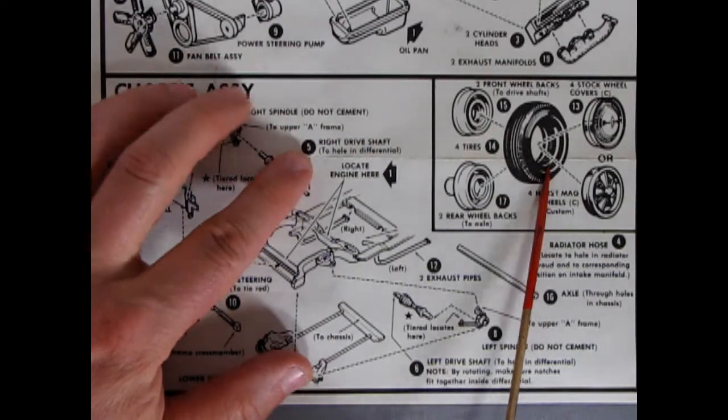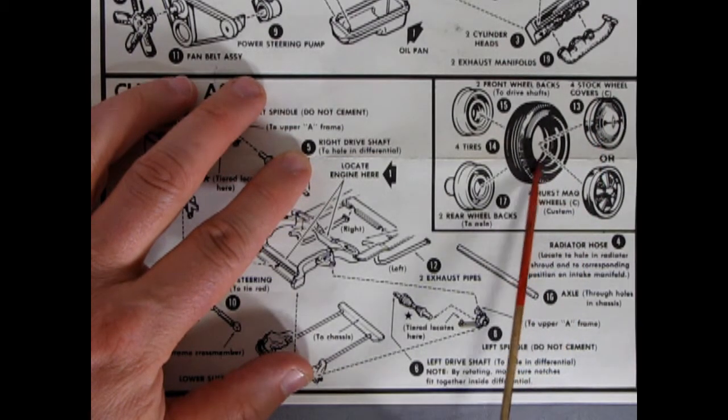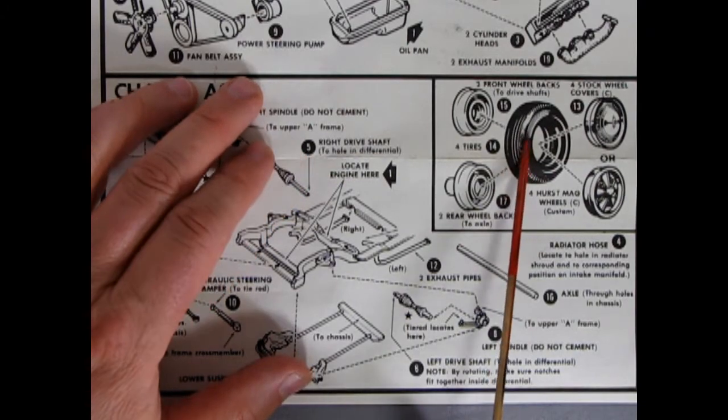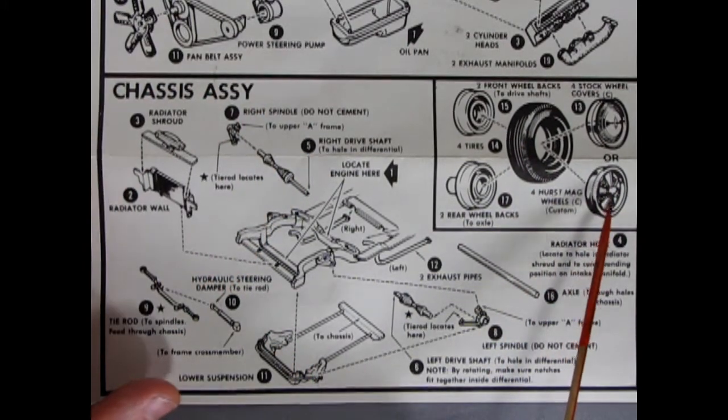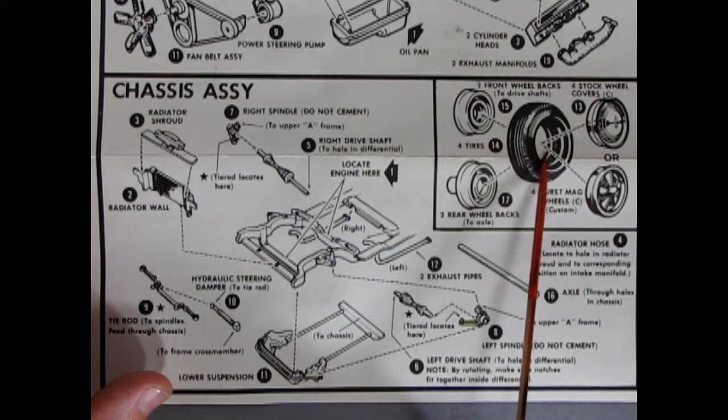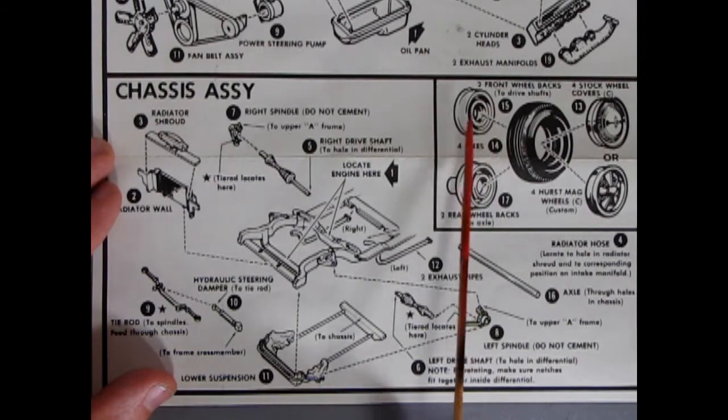And then here we have our choice of wheels. You of course can get your great big Oldsmobile stock wheel covers to pop into those rock-hard tires, or use your Hurst mag wheels. These ones are really cool as well and they pop in the tires. Of course the tires have white walls on them, and then you've got your front wheel backs and your rear wheel backs to pop into place.